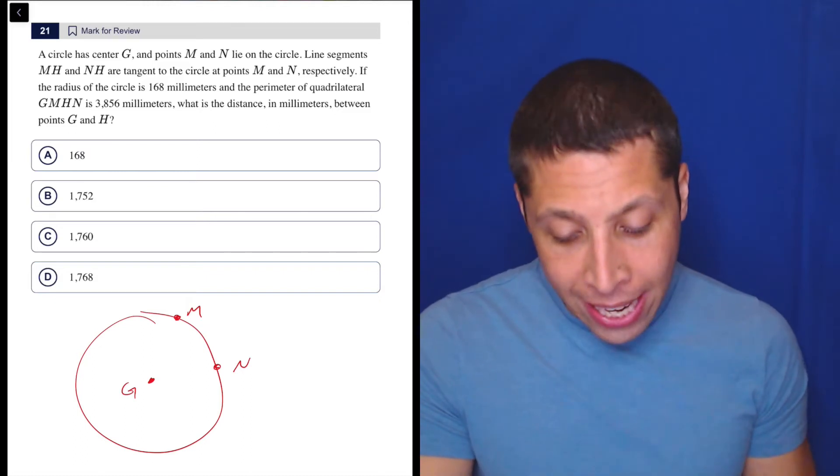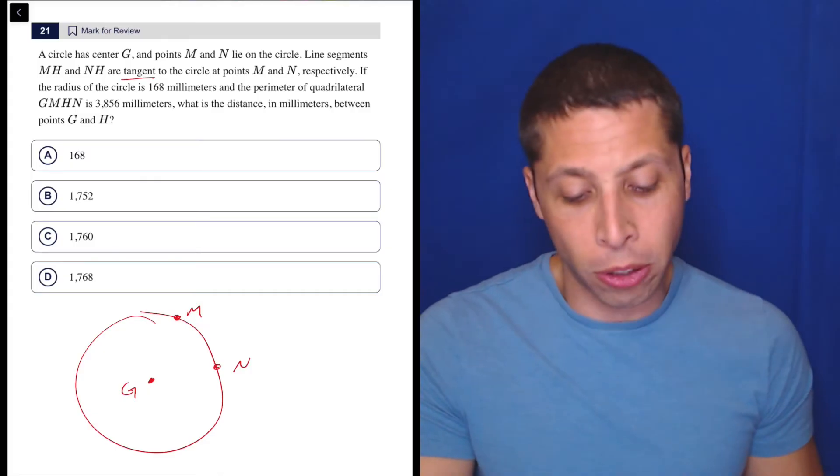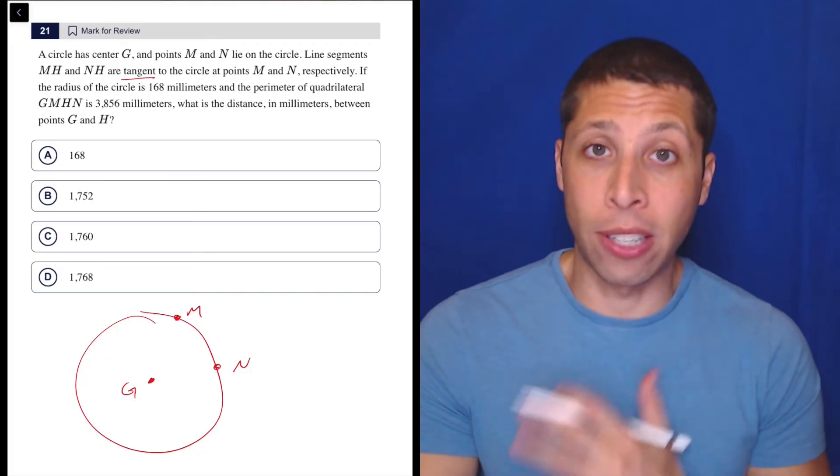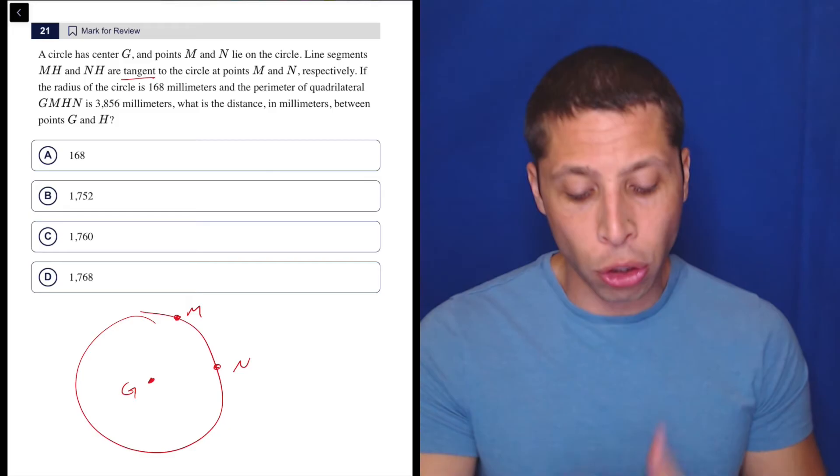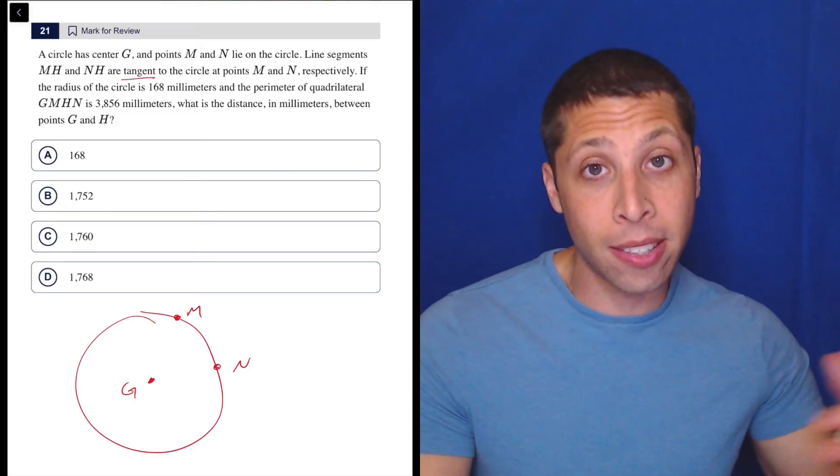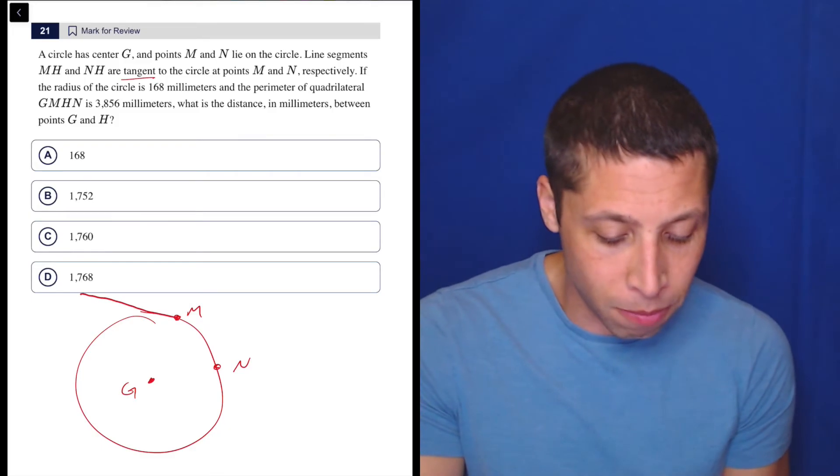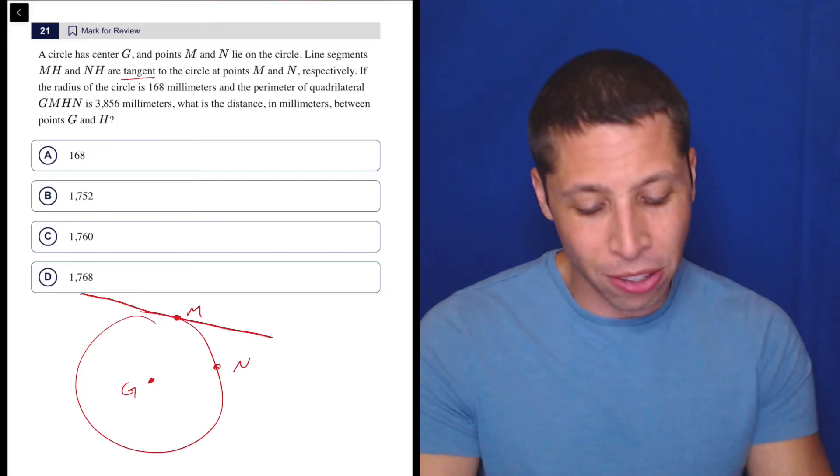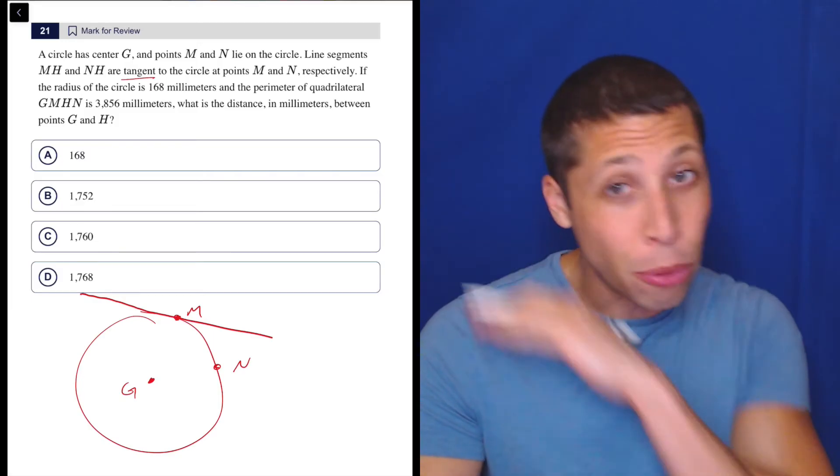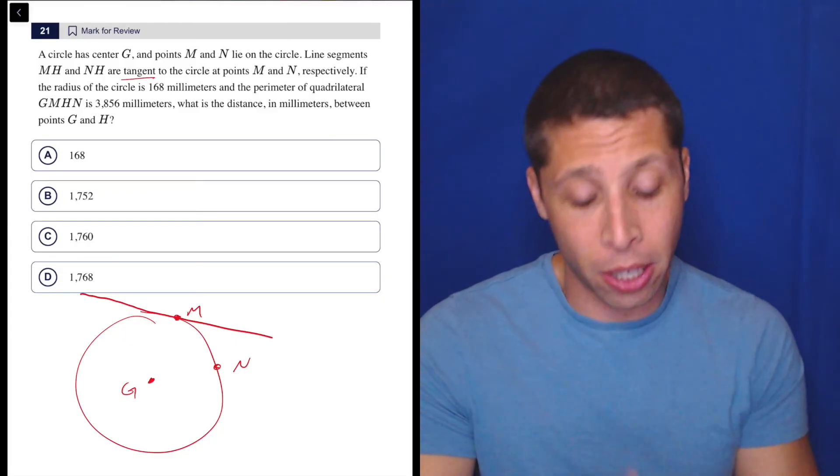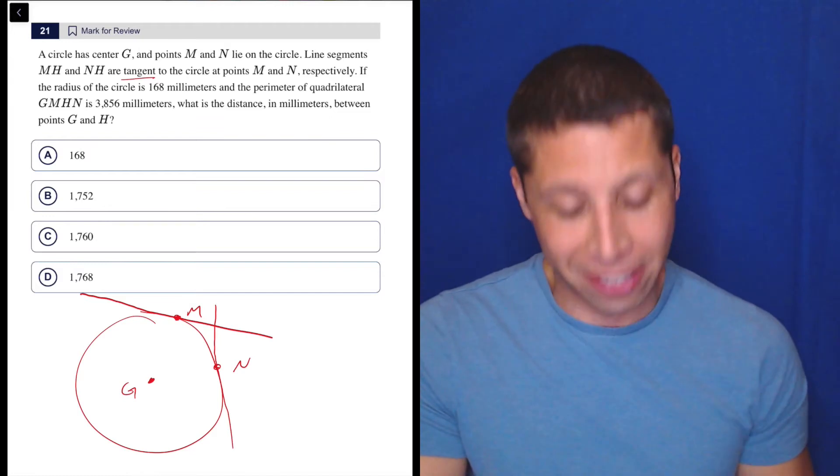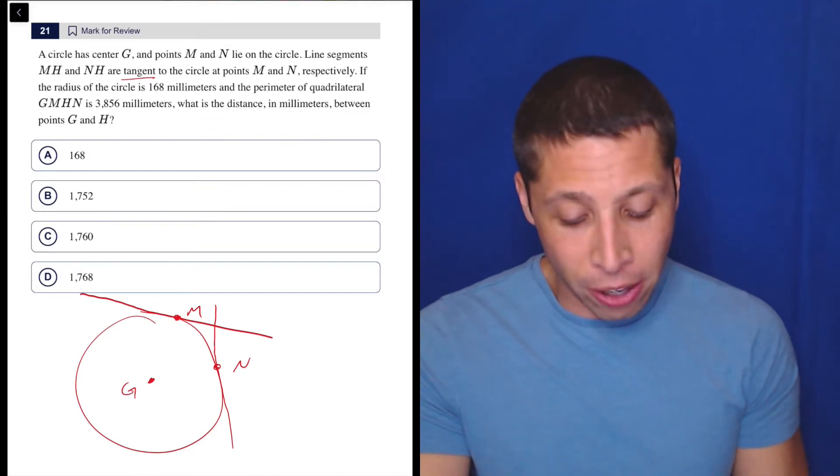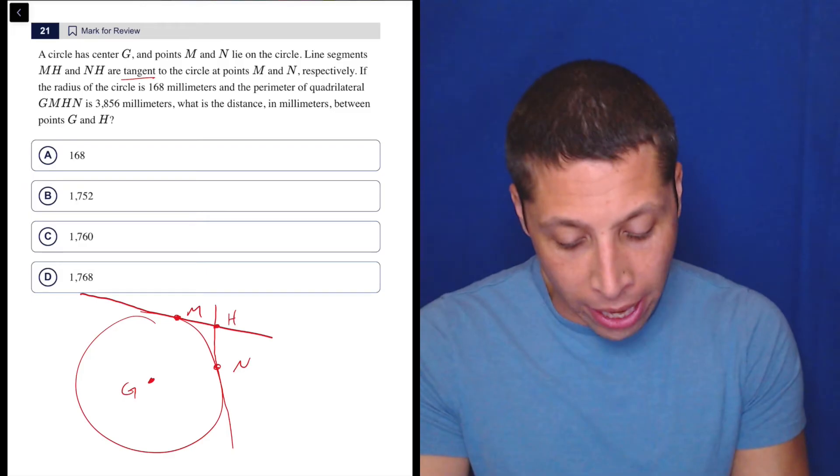Line segments MH and NH are tangent to the circle at points M and N. Now this is the key piece because we need to know that tangent is giving us a lot of important information. It's not about trigonometry; a tangent line with a circle is going to just graze the circle. It's gonna hit it once, so it just passes right by at M. It's not going through the circle, it's not a chord, it's not a diameter. We could do the same thing with N. Those are tangent lines and they're gonna intersect somewhere at H.